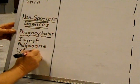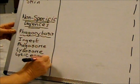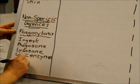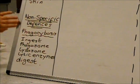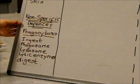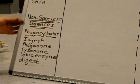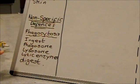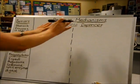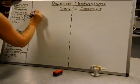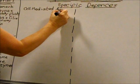Key words for phagocytosis: ingest, phagosome, lysosomes, and digested. These defenses are called non-specific because they attempt to destroy anything entering the body carrying non-self antigens. If the pathogen does manage to pass beyond phagocytosis, the specific defenses come into play.